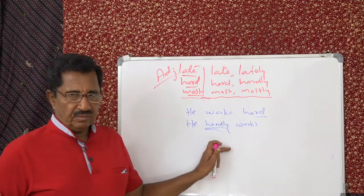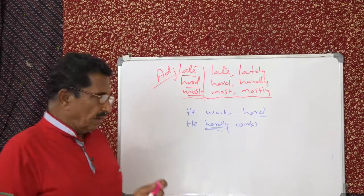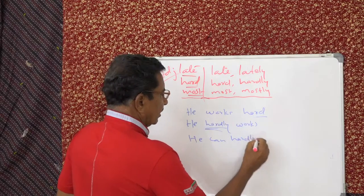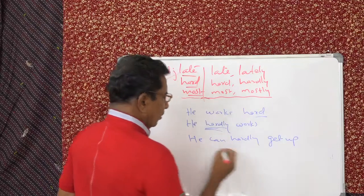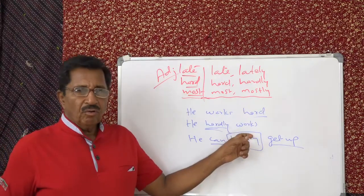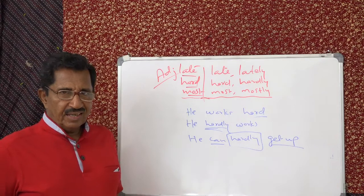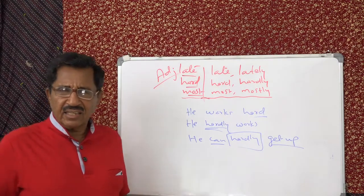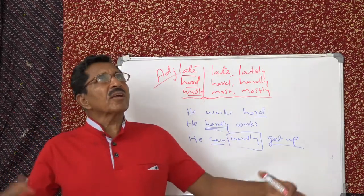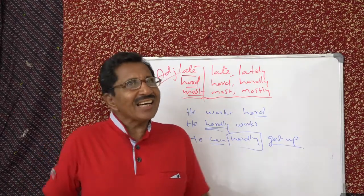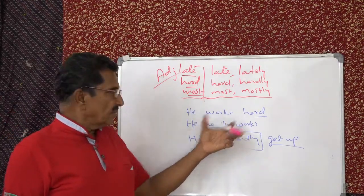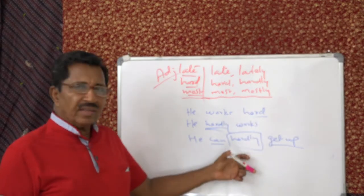He can hardly get up. Hardly is used before verbs. Listen. But if this is a compound verb, you use it in the middle. For example, he can hardly get up. See this, it's a compound verb - can get up. So you are using hardly in the middle. Otherwise, hardly is used before the verb.